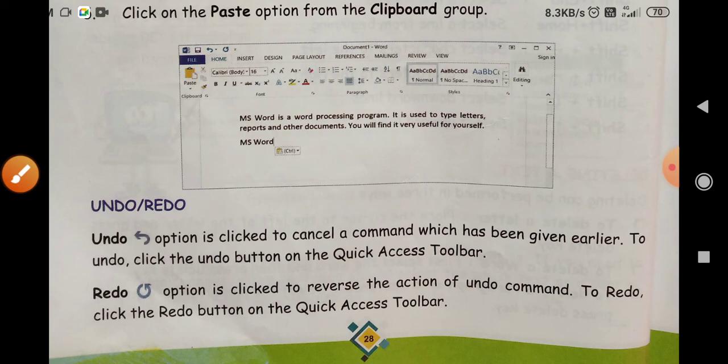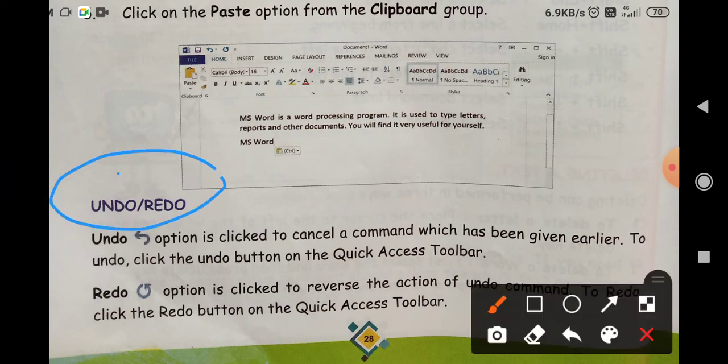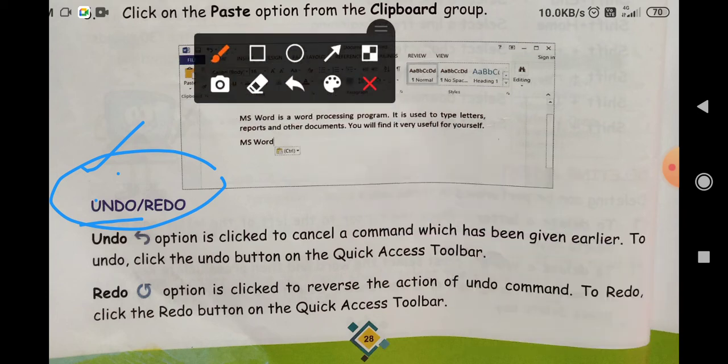Undo and redo. Undo option is clicked to cancel a command which has been given earlier. To undo, click the Undo button on the Quick Access Toolbar. Redo means what you have undone, redo will bring it back. Redo option is clicked to reverse the action of undo command. To redo, click the Redo button on the Quick Access Toolbar.